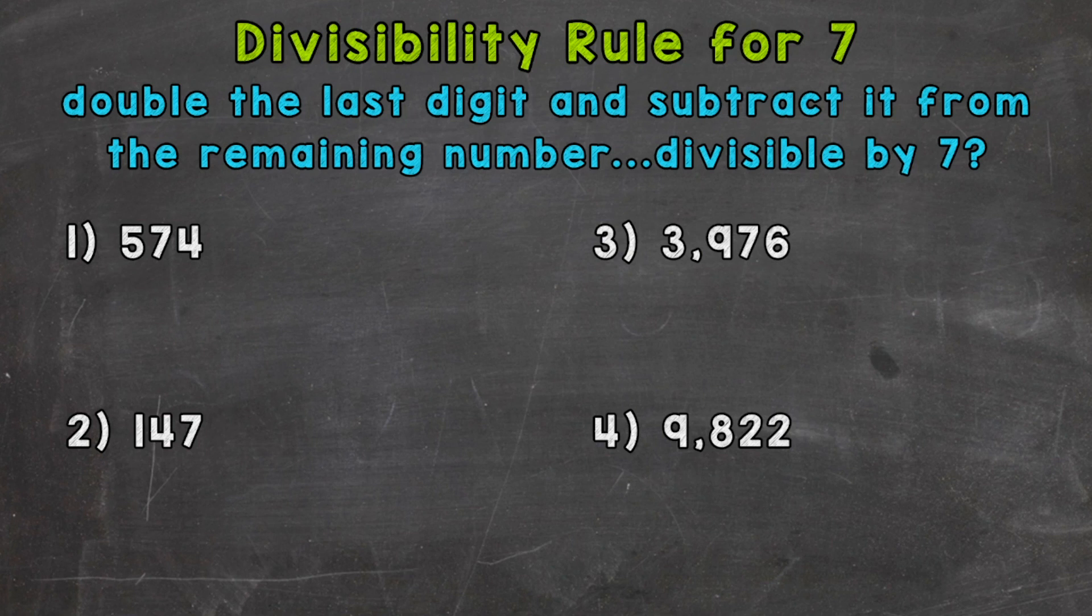We can divide by 7 without getting a remainder. Now, this is going to be based on the rule at the top of the screen. We're going to double the last digit and subtract it from the remaining number. If that gives us a number that's divisible by 7, then the original number is divisible by 7.